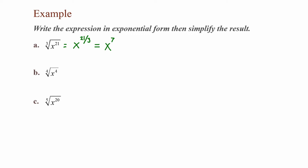For Part B, we have the fourth root of x to the fourth. Rewriting this in exponential form, I have x to the fourth power divided by my root, which is four. Four divided by four is one, so my answer is x to the first power, which I can write as x.